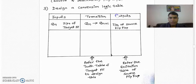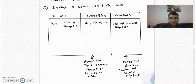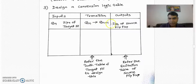To design a conversion logic table, it has three columns. The first is input, second is transition, and third is output column. The inputs of the conversion logic table include a standard input Qn and other inputs are the inputs of the target flip-flop. In the transition column, we always have present state to next state transition — that is, present state is Qn and next state is Qn+1. In the output column, we have inputs of the source flip-flop.